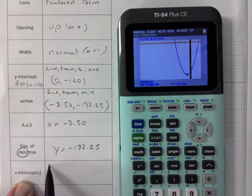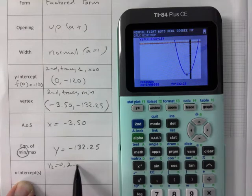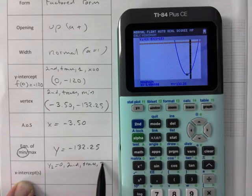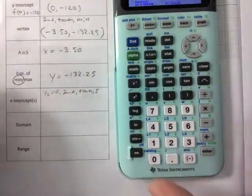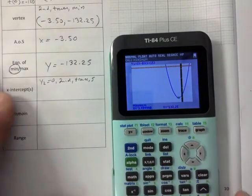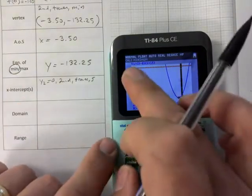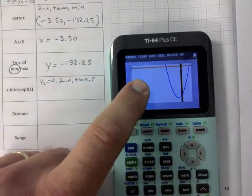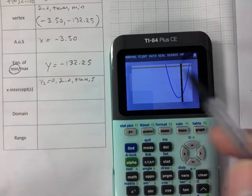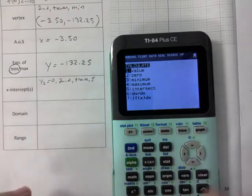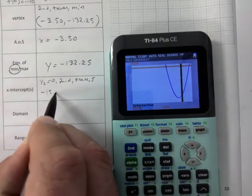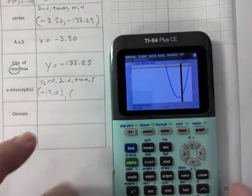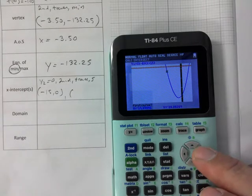X intercepts. I let y2 equal to zero and then I'm going to find the intersection. Let me just do this here. And so I already have y2. You need to make sure when you do this, you graph first because you need that red line, the horizontal line to appear here or else it will not be able to find the intersection. So I'm going to go closer to that one there, hit enter three times. That's negative 15, zero.